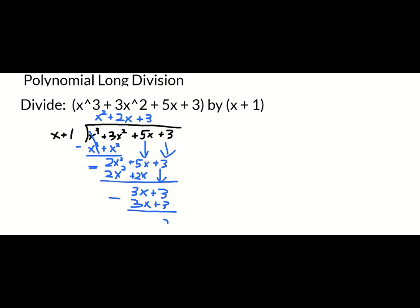So that's like my remainder is zero. And I can come to the conclusion that my x squared plus 2x plus 3 times x plus 1 is equal to x cubed plus 3x squared plus 5x plus 3. In other words, this is the quotient.